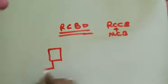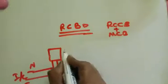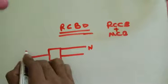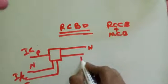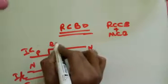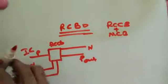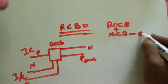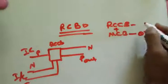RCBO has terminals for incoming and outgoing neutral and phase. How does RCBO work? MCB provides over voltage protection, and RCCB provides residual current protection.